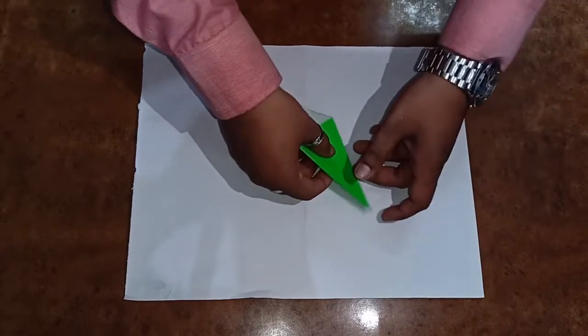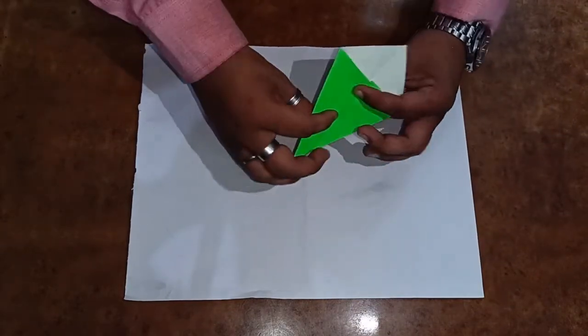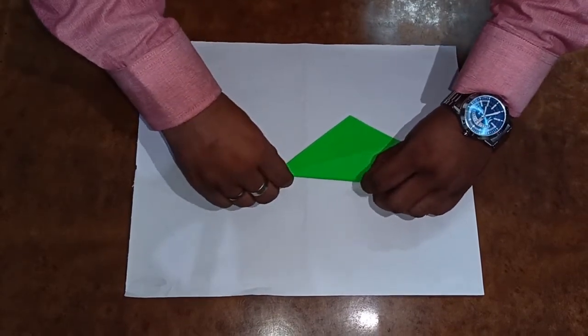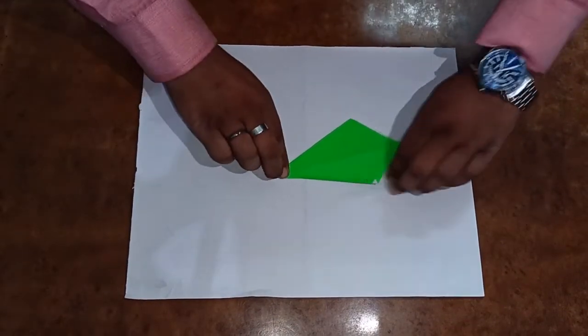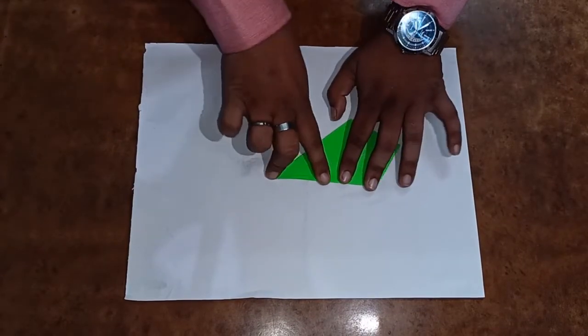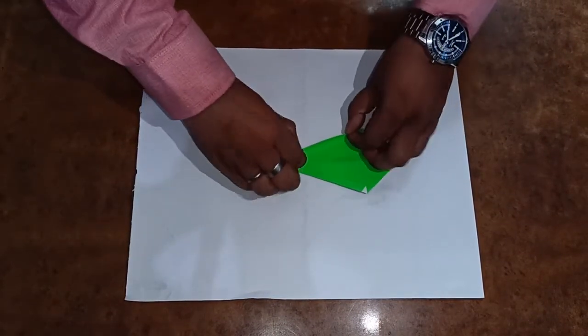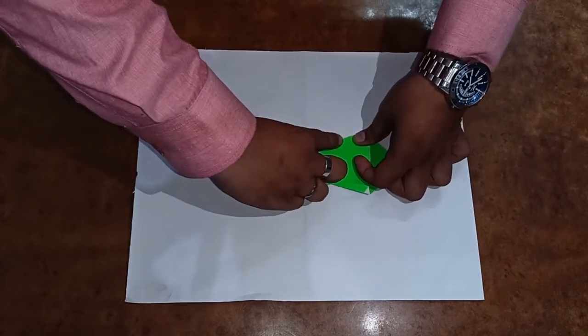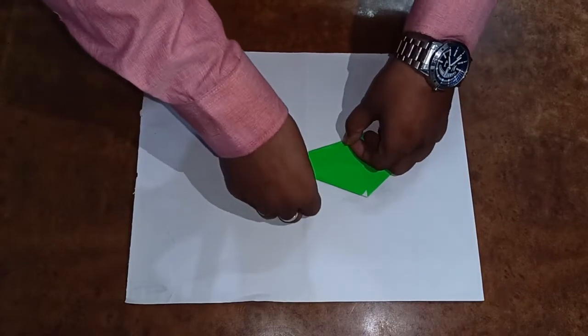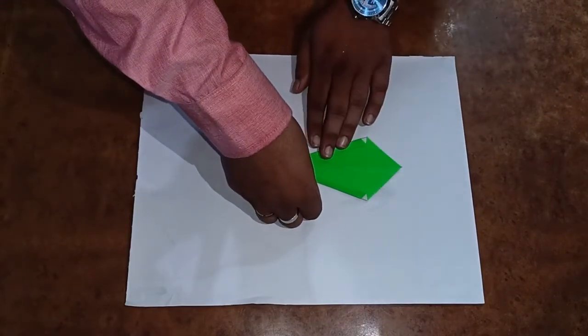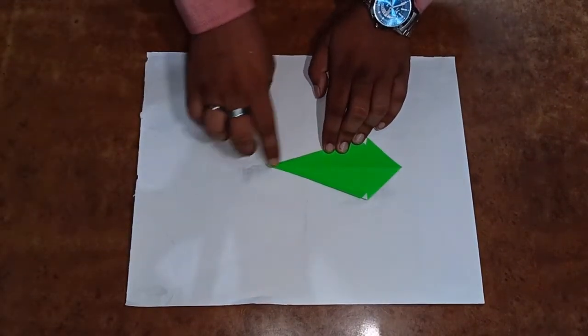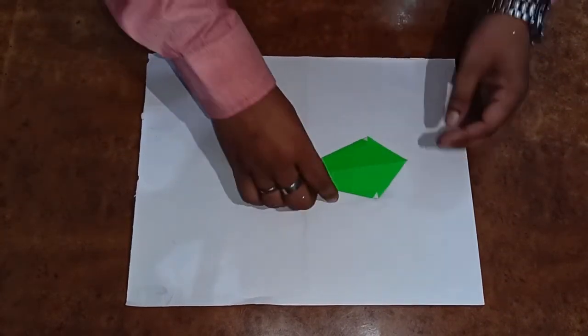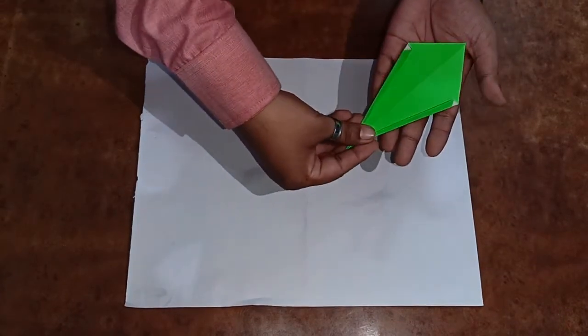Now, what you have to do, students, you just have to turn it around and fold like this. Keep it as narrow as you can. So this white, it can't be shown. Fold it like this. See how I have done.